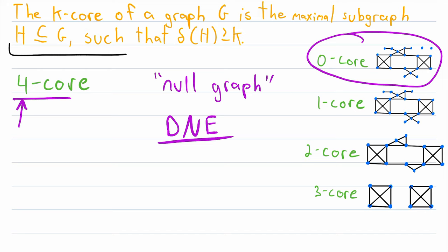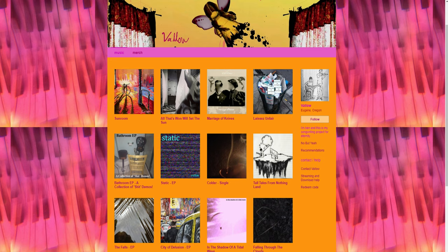So that, my friends, is what the K-core of a graph is — a very interesting topic. There are many more interesting properties we could discuss concerning K-cores, but for this lesson I really just wanted to focus on the basic understanding of what a K-core is and a process for finding them. If this topic interests you, I recommend playing around with K-cores yourself. There's a link in the description to a good paper on K-cores — that's actually where I got this graph from. Thank you very much for watching. Let me know in the comments if you have any questions, need anything clarified, or have any other video requests. I'll see you next time, and be sure to subscribe for the swankiest math lessons on the internet. A big thanks to Vallo, who kindly gave me permission to use his music in my math lessons — link to his music in the description.